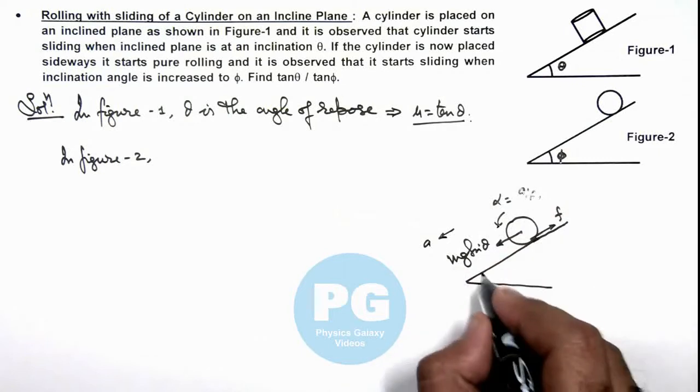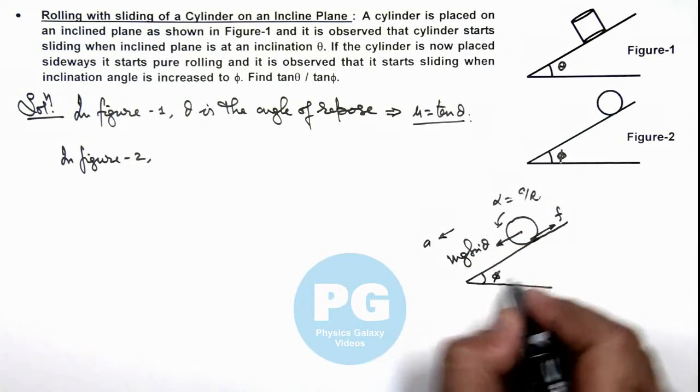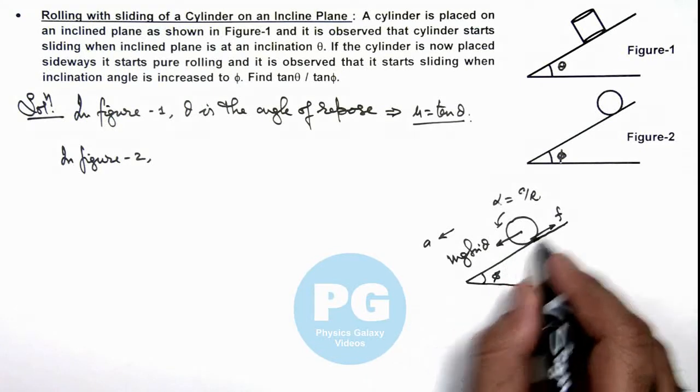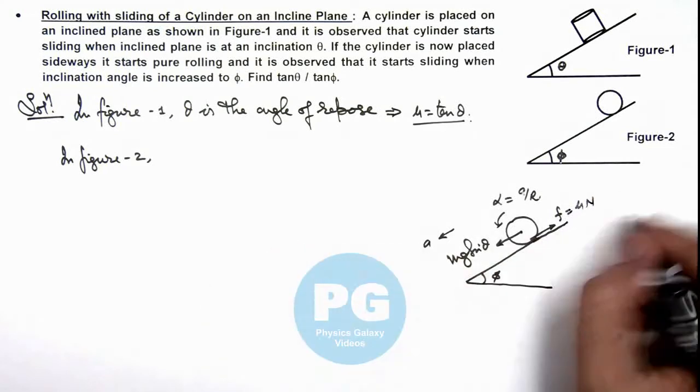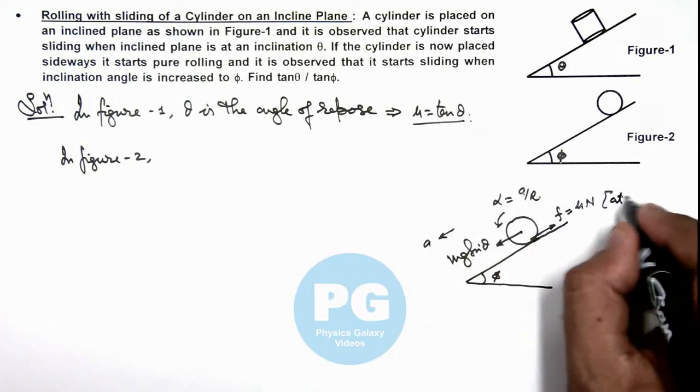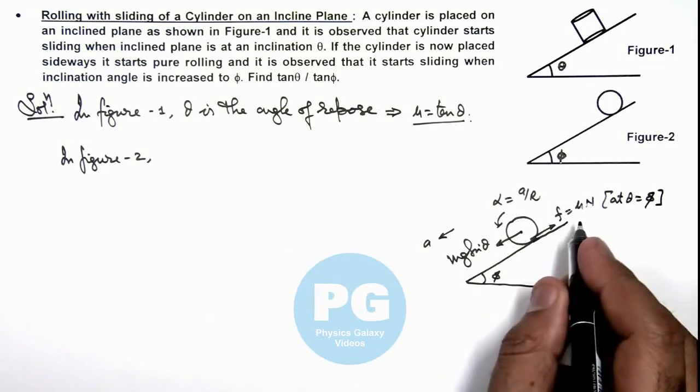Then at the angle phi, or at the angle theta equal to phi, we can say the friction approaches to the value mu n. Here we can write this happens at theta is equal to phi because it starts sliding.